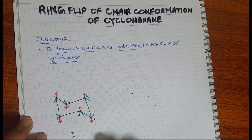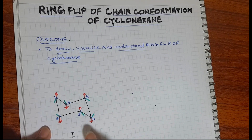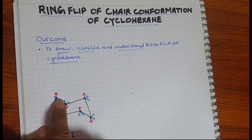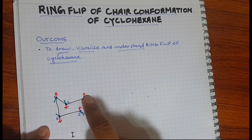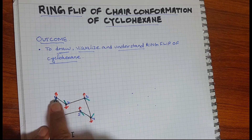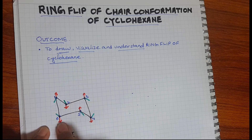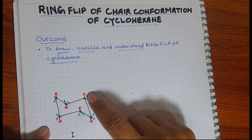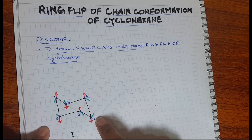In my previous video, I have discussed chair conformation of cyclohexane. I have drawn this chair conformation here to save time. This portion of this form is the headrest, this is the body and this is the footrest part of this chair. Six carbons are named and here we can see that the axial bonds are shown in red colour, whereas equatorial bonds are shown in the green colour.